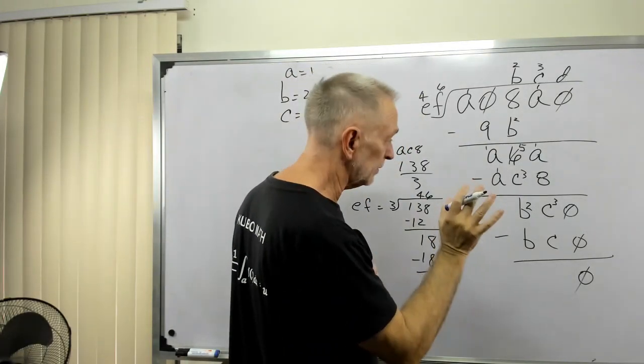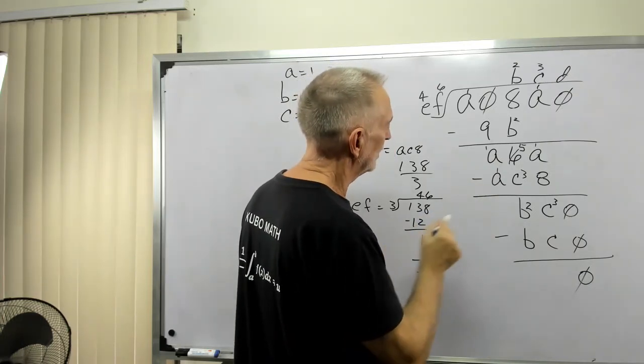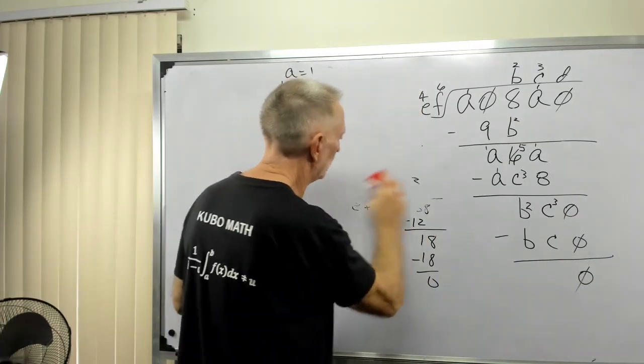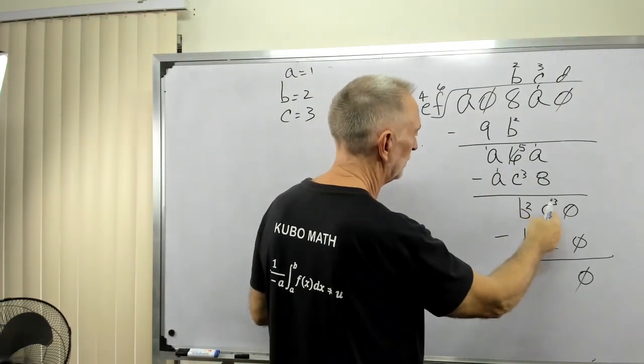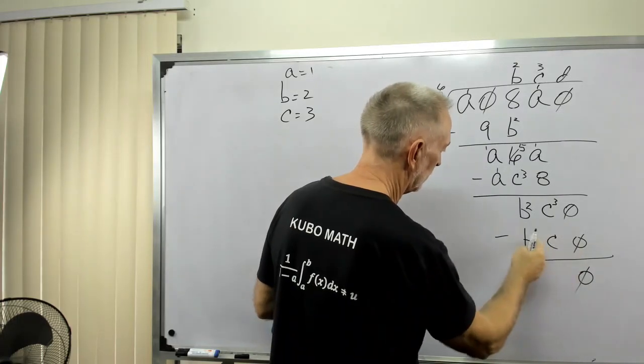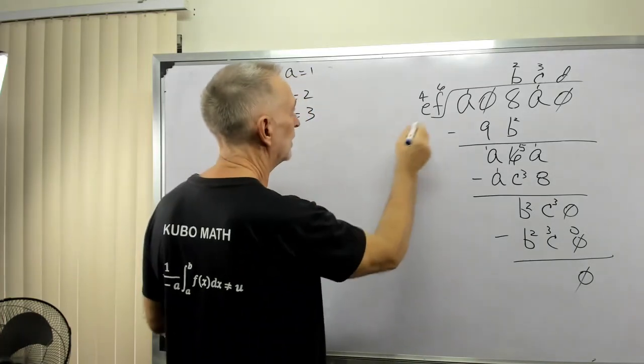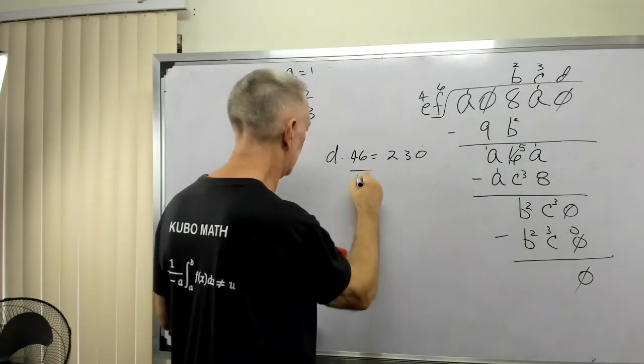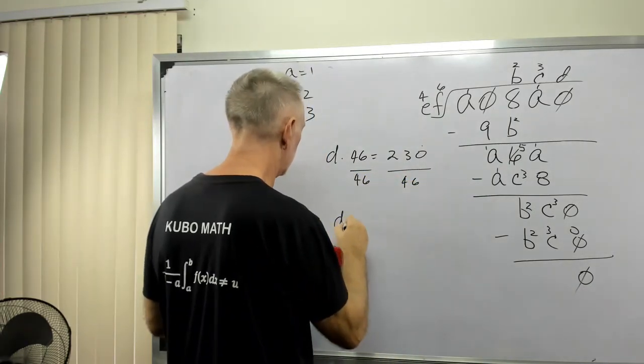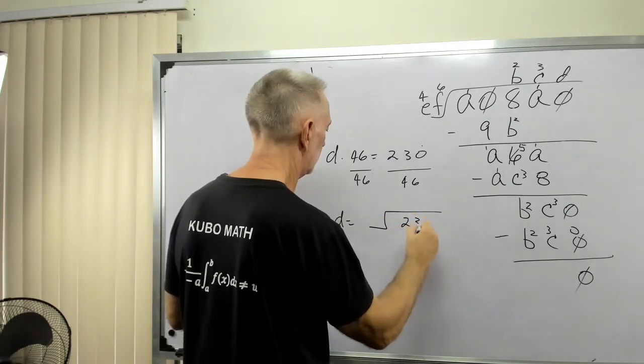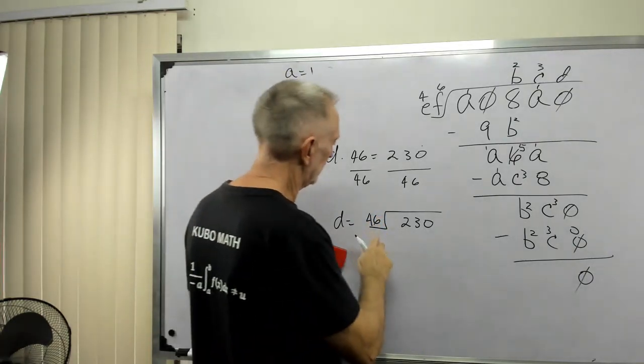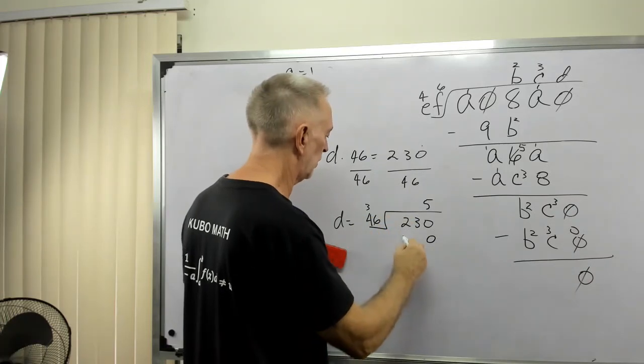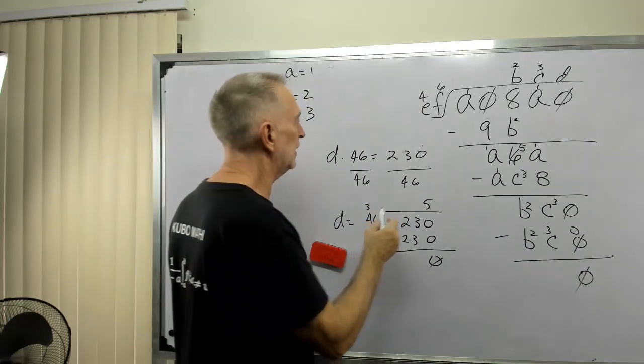Only thing we lack now, if we're okay, is D. Now, D times EF gives me BC0. And we're saying B was 2, C was 3, so 230. So we're saying D times 46 equals 230. So if I divide both sides by 46, that would equal D. D equals 230 divided by 46. Well, it needs to be 5. 5 times 6 is 30, carry the 3. 5 times 4 is 20, plus 3 is 23, and that would equal 0. So 5, D is equal to 5.